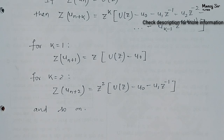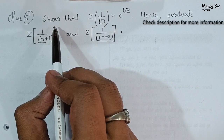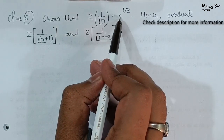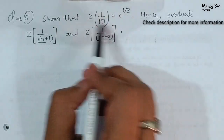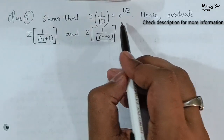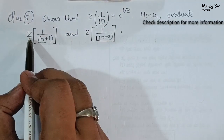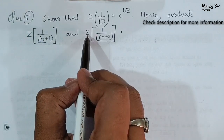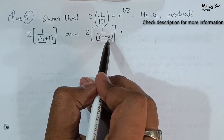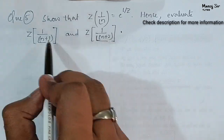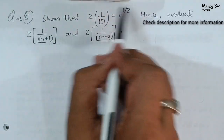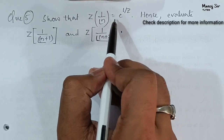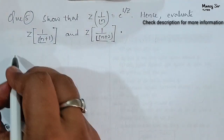Let us start with a problem — Question number 5. The question says: show that Z transform of 1 upon factorial n is equal to e to the power (1/z). After proving this, we need to evaluate Z transform of 1 upon factorial (n plus 1), and Z transform of 1 upon factorial (n plus 2).